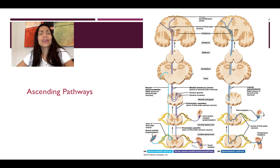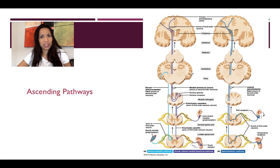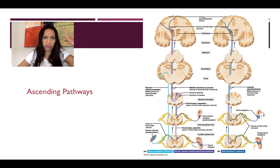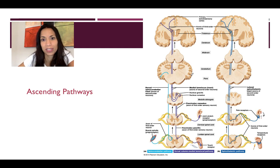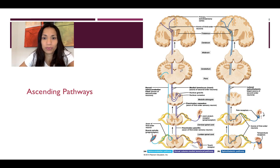Bear with me guys, I know this is the longest chapter we have in the course. Central nervous system — this is kind of important. What controls everything that we can describe in the human body. And believe me, this is only an overview, the big picture.